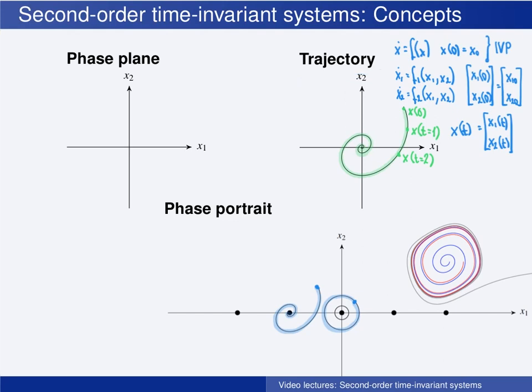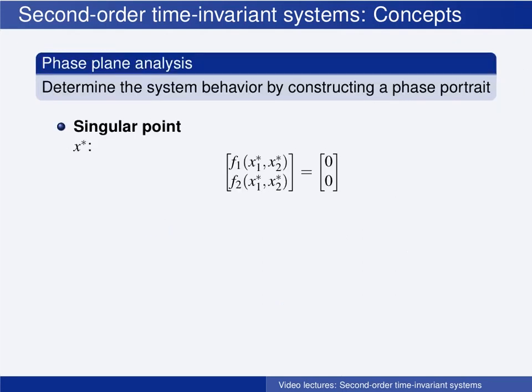This family of trajectories is called a phase portrait. Analyzing the system behavior in this way by constructing a phase portrait is called doing a phase plane analysis. And this is a nice graphical method for visualizing the qualitative behavior of the system.